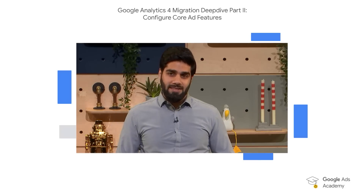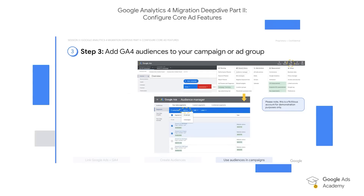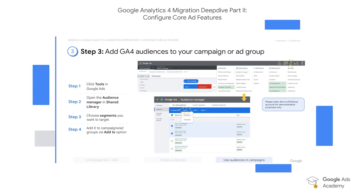Now let's move on to the final step where you can use these powerful audiences in your Google Ad campaigns. Step one, click on Tools on the top right in the Google Ads interface. Step two, open the audience manager from shared library options. You can now choose the segments you want to target in the dropdown. Final step, add these to the campaign or ad groups from the Add to option in the blue menu bar.